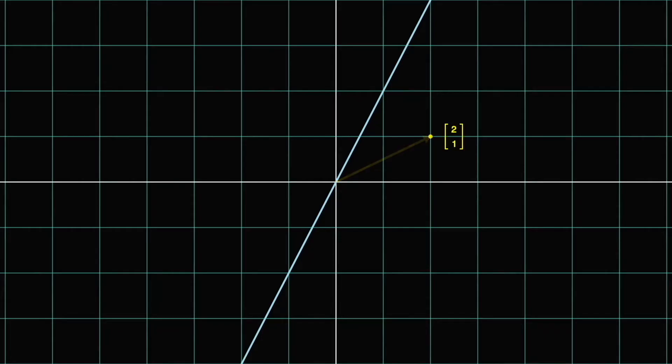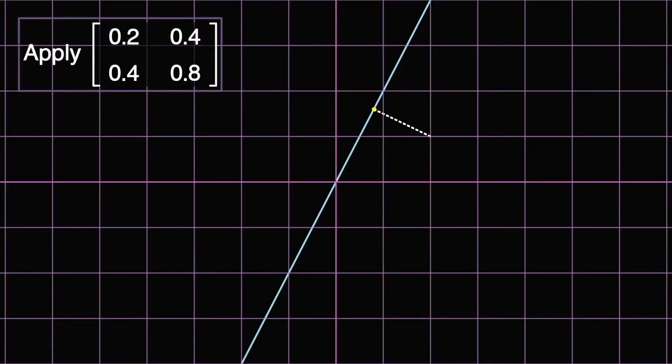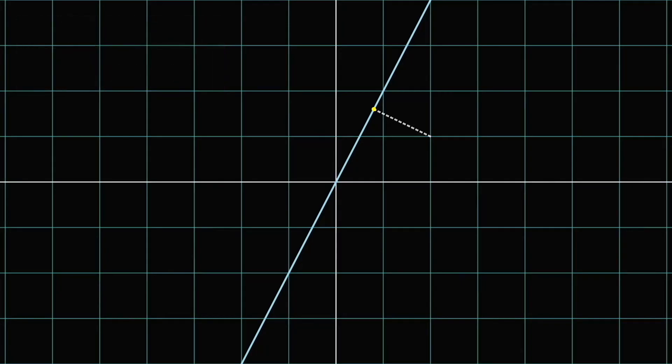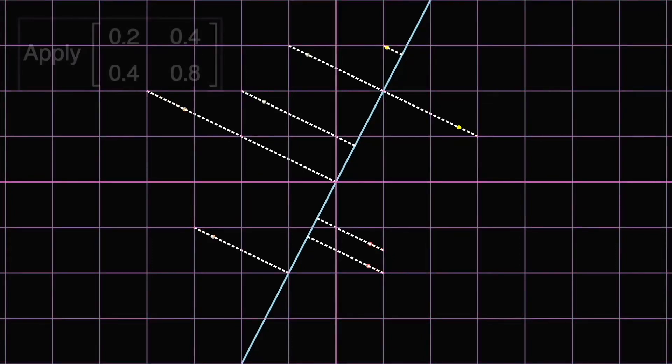The reason why this is called projection is because every vector always moves to its closest point on the subspace. For example, the vector is currently outside the blue line, and its closest point would be here. Applying the projection matrix would move our vector 2-1 exactly over there. And this is true for every single vector outside subspace. As targets of projection matrix, they all move towards their closest landing spot.